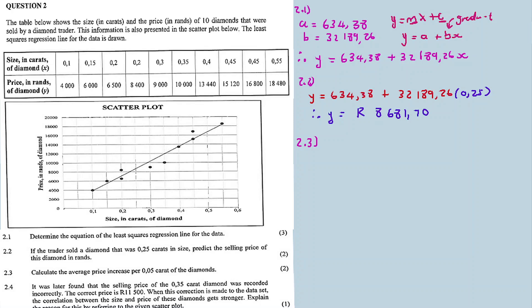Question 2.3: Calculate the average price increase per 0.05 carat of the diamonds. That's where the gradient comes in again. This is where the gradient comes in. Per 0.05 carat means the gradient here multiplied by this 0.05.